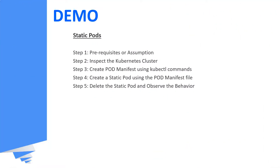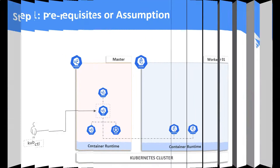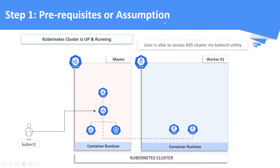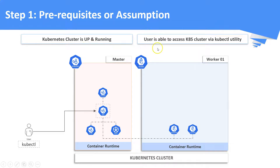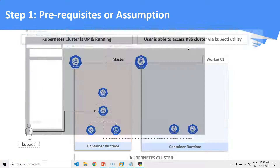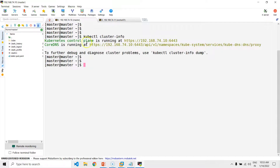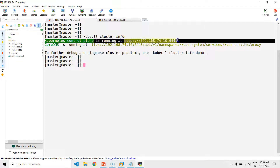Now let us see a demo on the static pod. We assume that our Kubernetes cluster is up and running and we are able to access the cluster via the command line utility kubectl. This is our master node where we have connected to the Kubernetes cluster using the command line. The kubectl cluster-info command gives the details of your cluster, and we have got a response which means we are able to access the Kubernetes cluster.